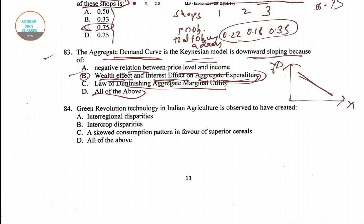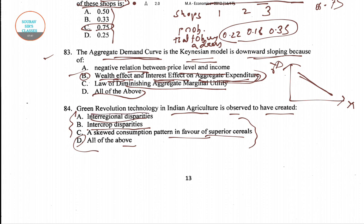Question number 84: Green revolution technology in Indian agriculture is observed to have created — inter-regional disparities, inter-crop disparities, a skewed consumption pattern in favor of superior cereals, and all of the above. All of the above is the right answer, option D — green revolution technology in Indian agriculture is observed to have created all three of these effects.